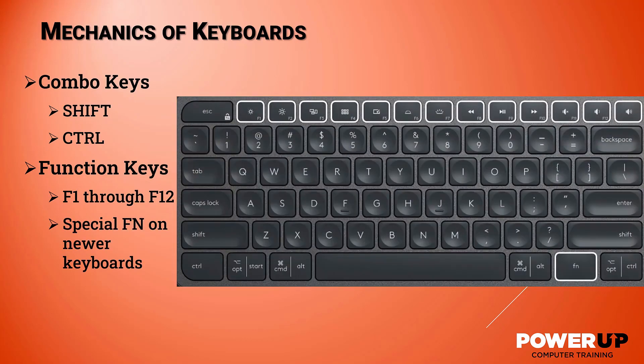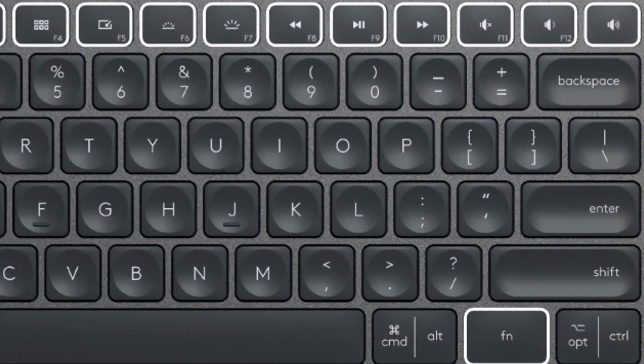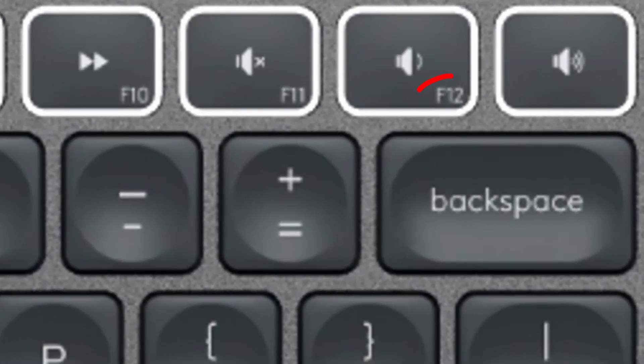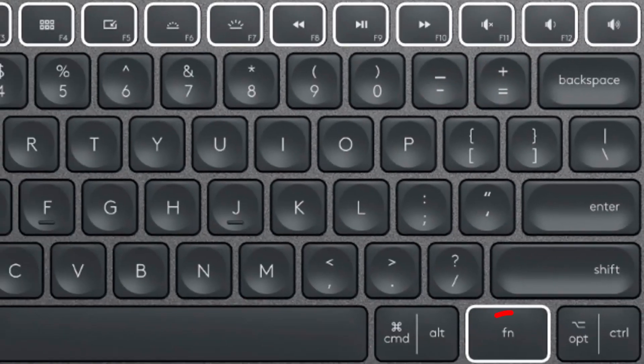Lastly, most modern keyboards have recruited the function keys into double duty, doing one type of command when pressed, like muting your sound, and another command when holding down the FN key as a combo. Typically, the smaller sized indicator, in this case the function keys, require the use of the FN key.